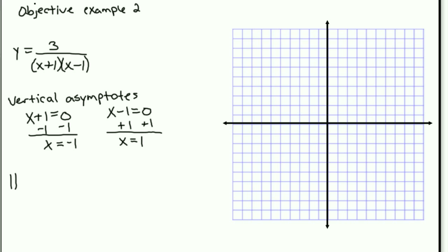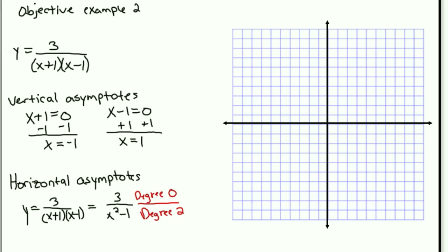The next thing I want to check for are horizontal asymptotes. Well, similar to Example 1, the degree of the numerator is 0, and the degree of the denominator is actually 2. Because if I did the multiplication of x plus 1 times x minus 1, that becomes 3 over x squared minus 1. So when I determine the degrees here, this has degree 0, and this has degree 2. And remember that when the degree of the numerator is less than the degree of the denominator, that implies your horizontal asymptote is at y equals 0.